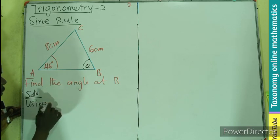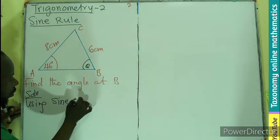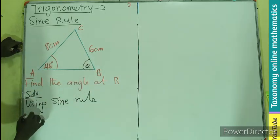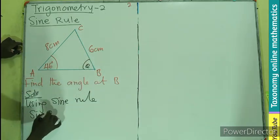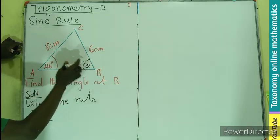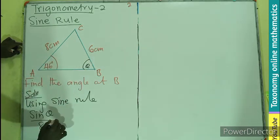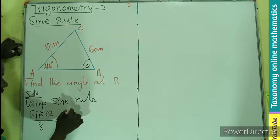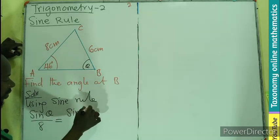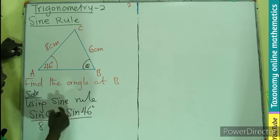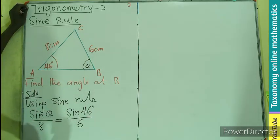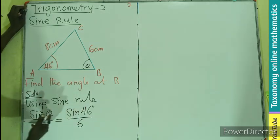Using the sine rule. It is good to begin with the angle. Therefore, sine theta, which is the angle at B, divided by the side facing B, which is 8, equals sine of 46 degrees divided by the side facing angle A, which is 6 centimeters.